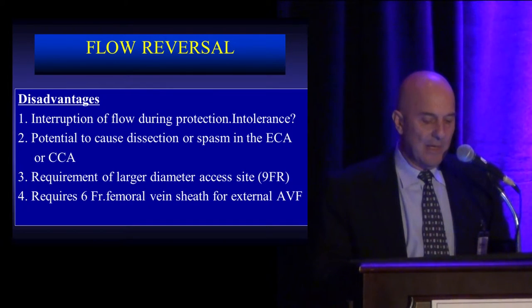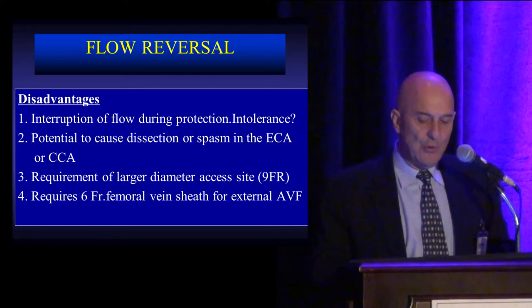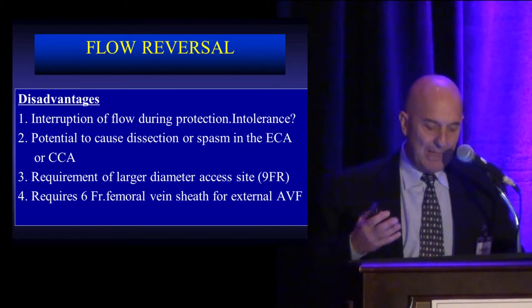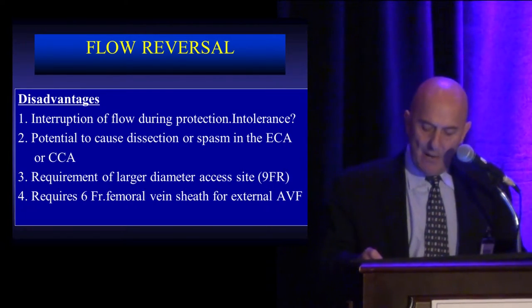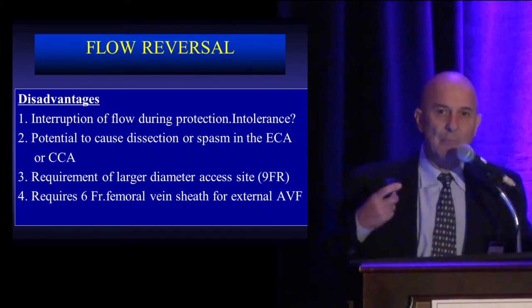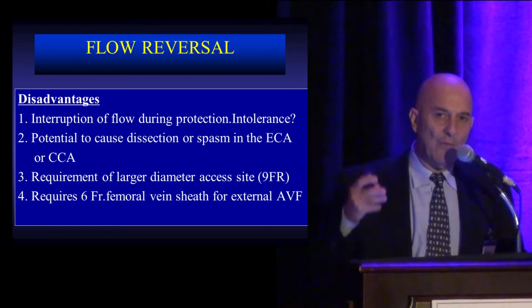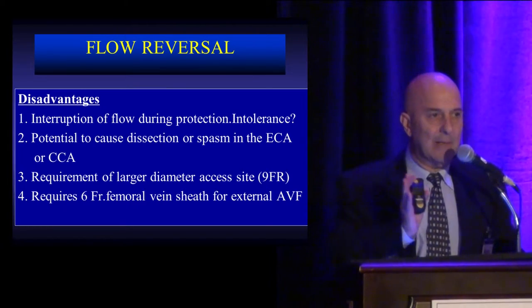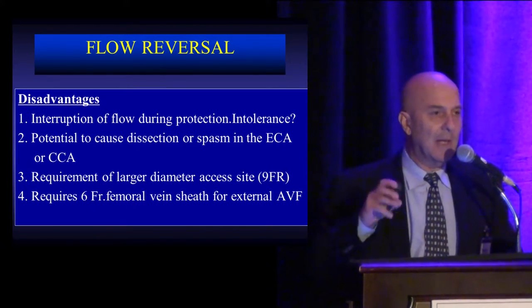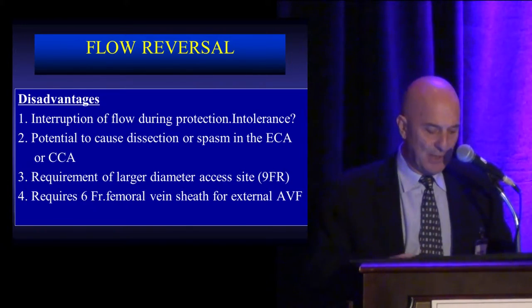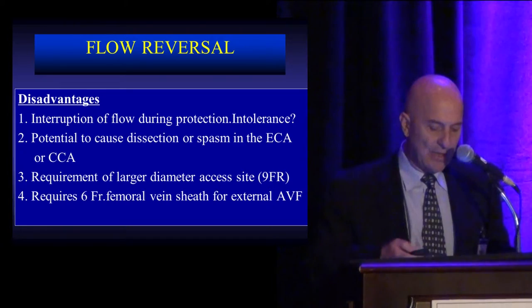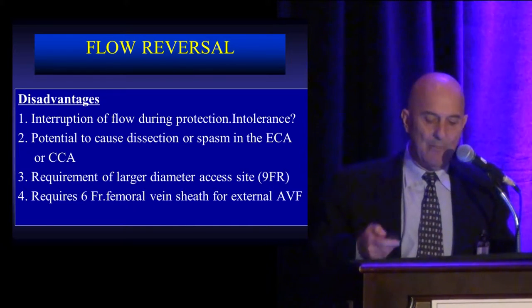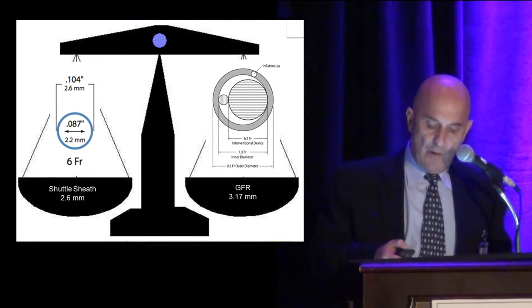There are some disadvantages. Flow is stopped during protection and some patients do not tolerate it, though the number is low. Because of the balloon in the common carotid artery, dissection or spasm can occur at the external or common carotid artery level. A larger sheath size is required — filter cases use a 6 French sheath, while this system uses a 9 French — and you also need a femoral venous sheath, adding one more step compared to filter cases.